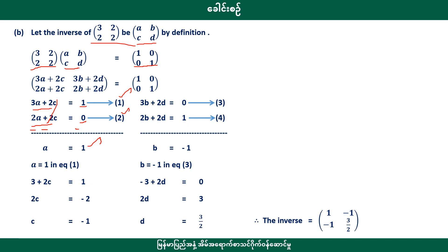Looking at the equations: equation 1 gives A plus 4C equal to 1. Equation 2 gives A plus 2C equal to 0. Equation 3 gives B plus 2D equal to 1. We want equation to have B plus 2D equal to zero. We get minus 2D equal to minus 2.